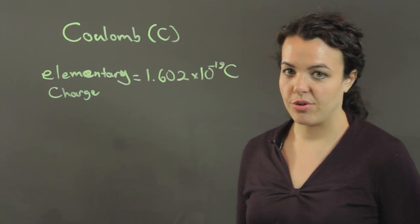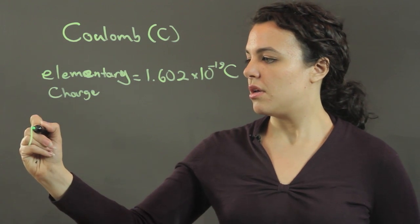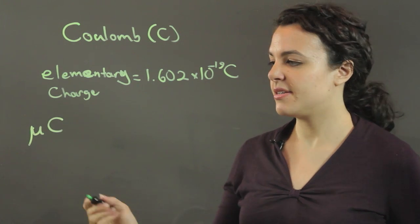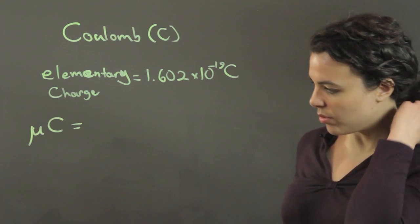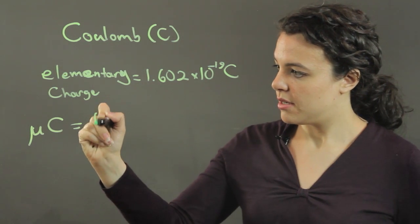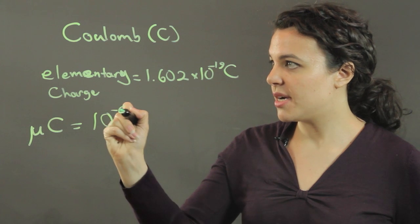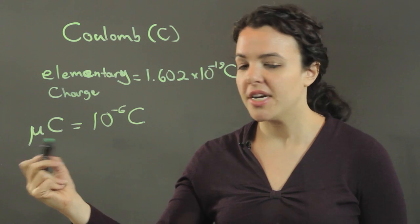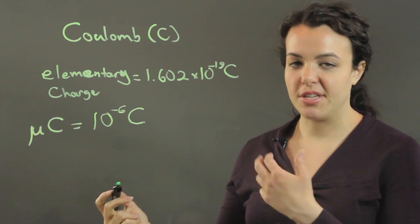Now a microcoulomb, which we write like this, is equal to 10 to the minus 6 coulombs. In fact, the prefix micro means 10 to the minus 6.